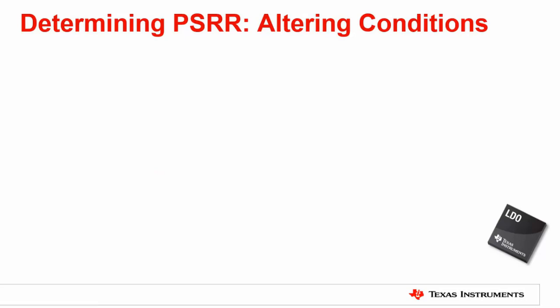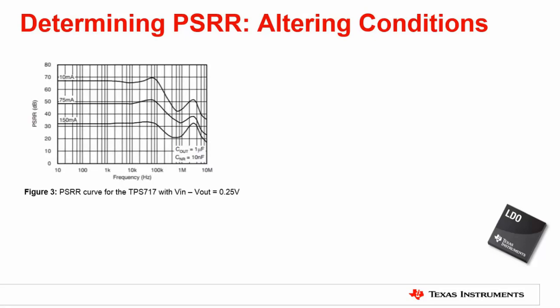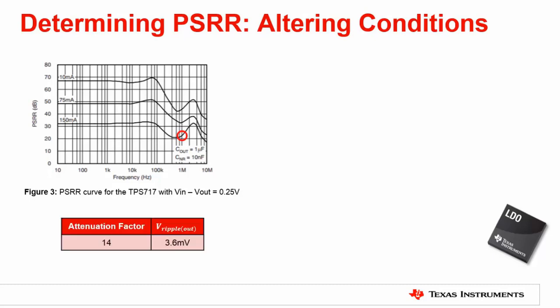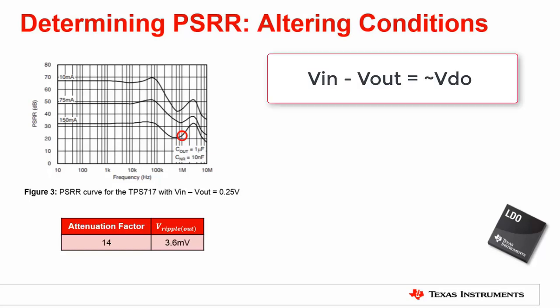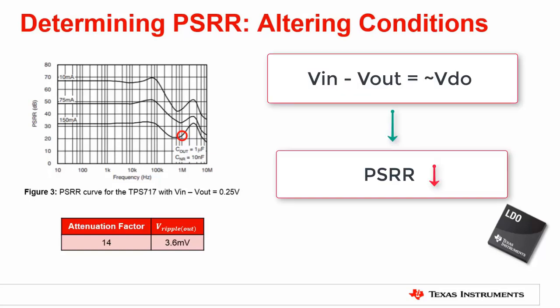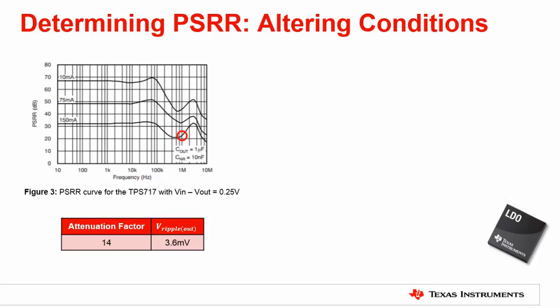But let's say that you changed the conditions and decided to reduce your Vin-to-Vout delta to 250 millivolts in order to regulate more efficiently. We would then have to consult figure 3. You can see that if we hold all other conditions constant, the PSRR at 1 megahertz is reduced to 23 decibels, or an attenuation factor of 14. This is due to the fact that the CMOS pass element is entering the triode or linear region. In other words, as the Vin-to-Vout delta approaches the dropout voltage, PSRR begins to degrade. A lower output current decreases the dropout voltage and helps improve PSRR.